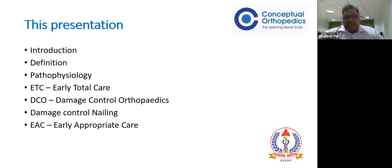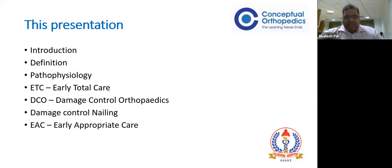Through this presentation, we will introduce ourselves to the concept of polytrauma, define what polytrauma is - most of us do not know exactly what polytrauma is - see the pathophysiology behind it, then go to the concepts: early total care, damage control orthopedics, and two more concepts - damage control nailing and early appropriate care. We need to know each one of these because this may be the life-saving grace for our patient. We cannot do any one for all patients; we need to customize treatment depending on physiology.